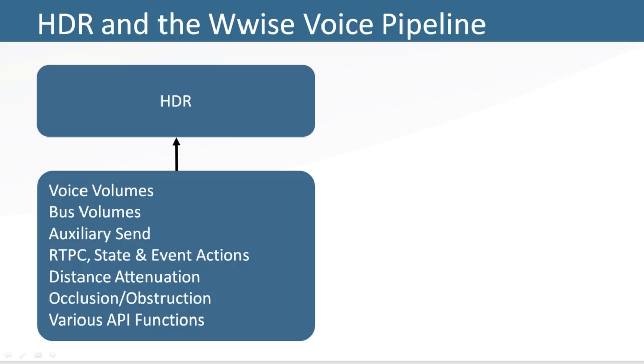These volumes are the sum of volumes from the actor-mixer hierarchy objects, volumes from buses without effects, auxiliary send volumes, RTPC states and event actions volumes, distance attenuation, occlusion, obstruction, and various API functions.